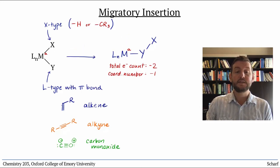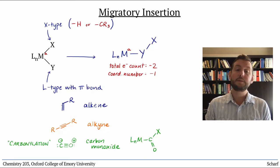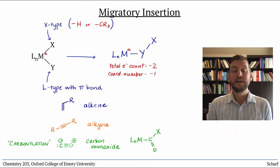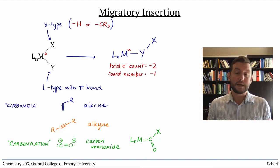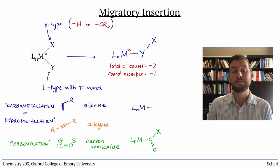When the L-type ligand that's inserting is carbon monoxide, the process is called carbonylation, and with alkenes or alkynes, it's called carbometallation or hydrometallation, depending on whether the X-type ligand is an alkyl group or a hydrogen.